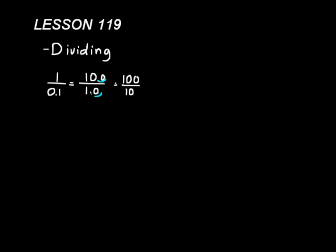So writing each of these in long division format, we'd have 0.1 into 1 there, we'd have 1 into 10 here, and then 10 into 100. All of those will give you 10 for an answer.